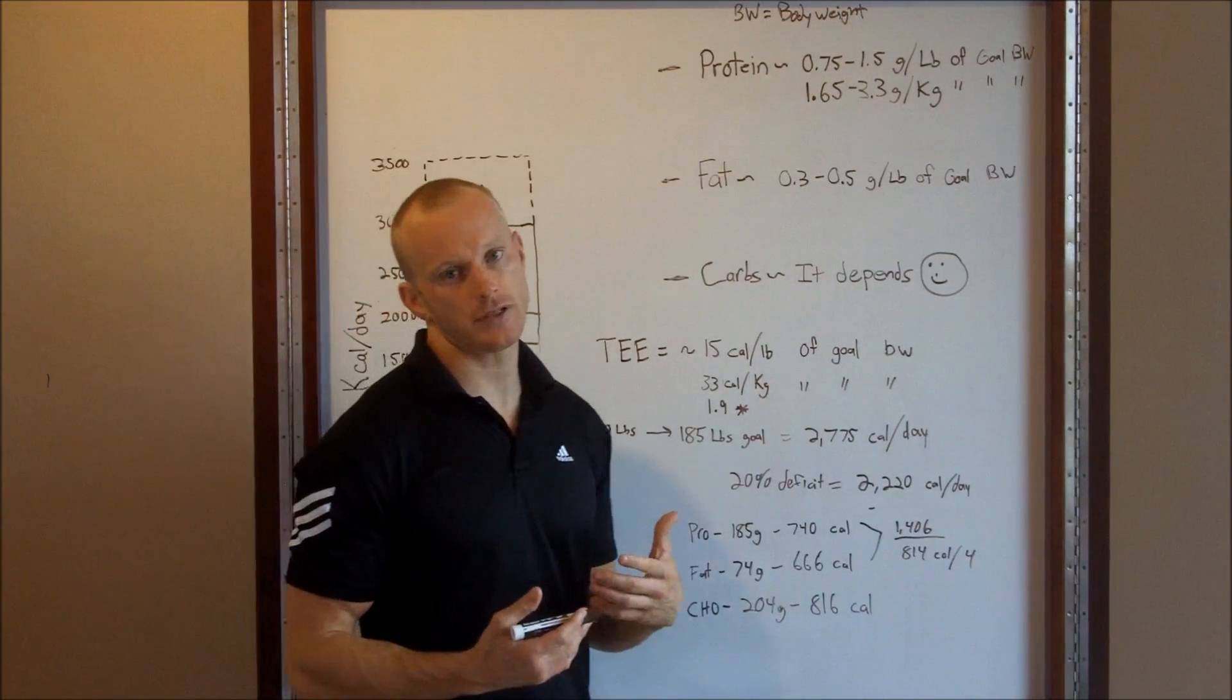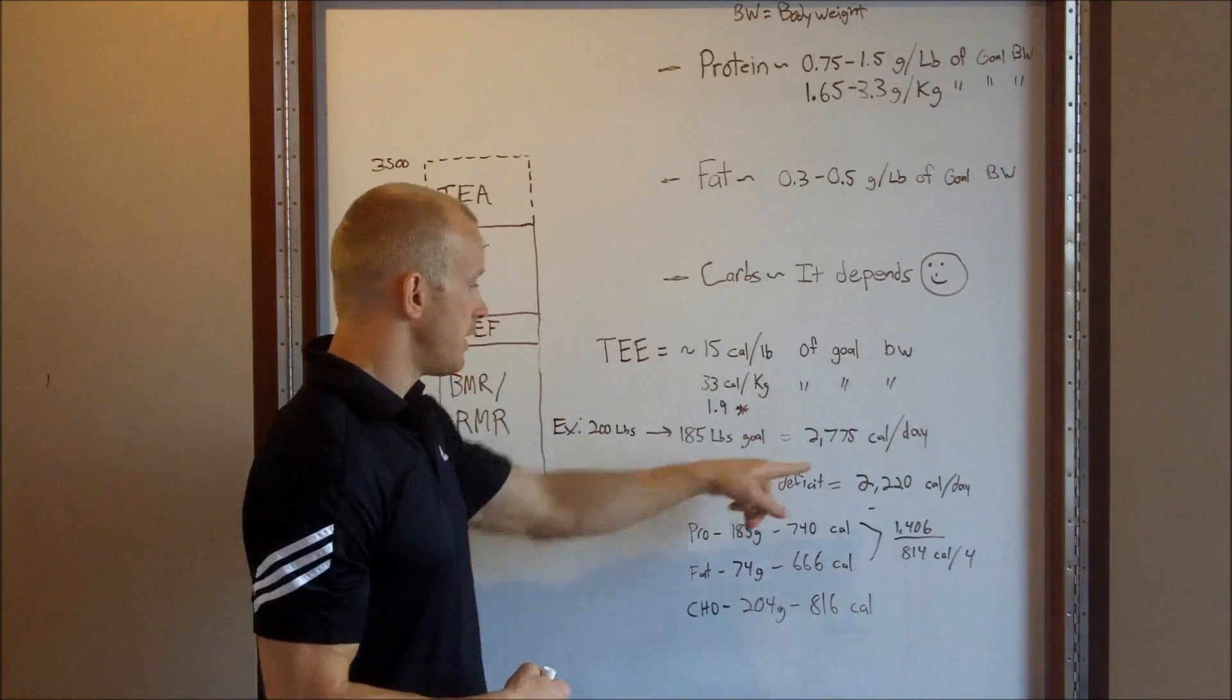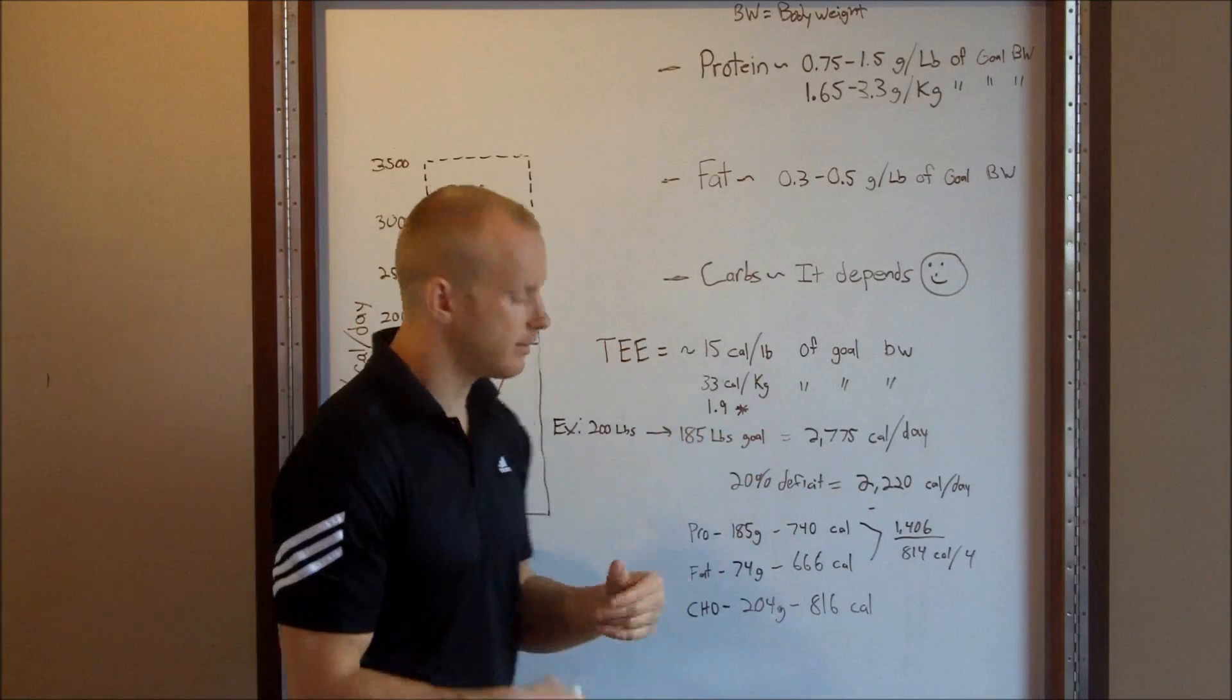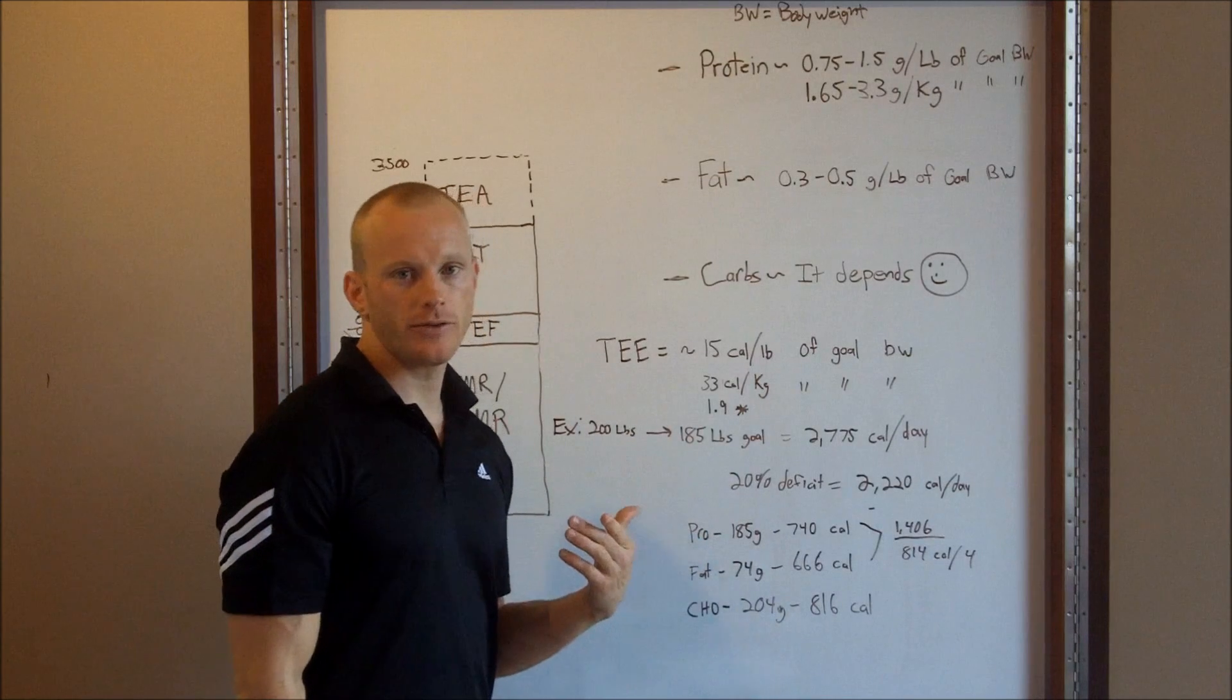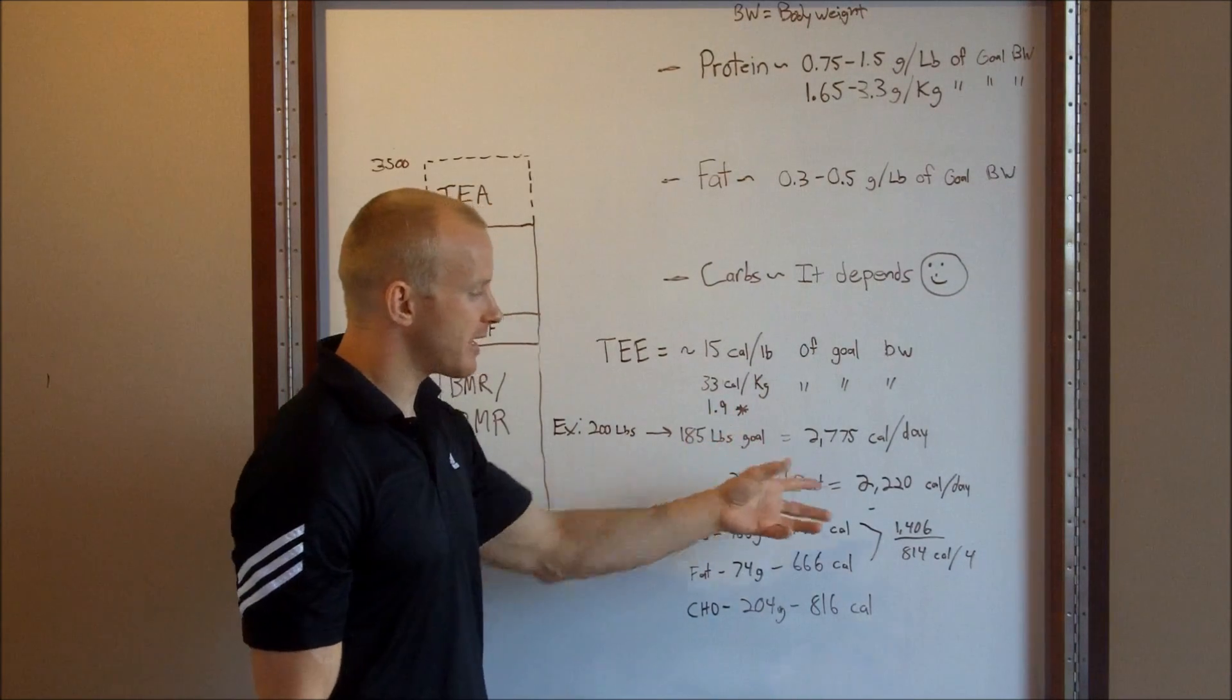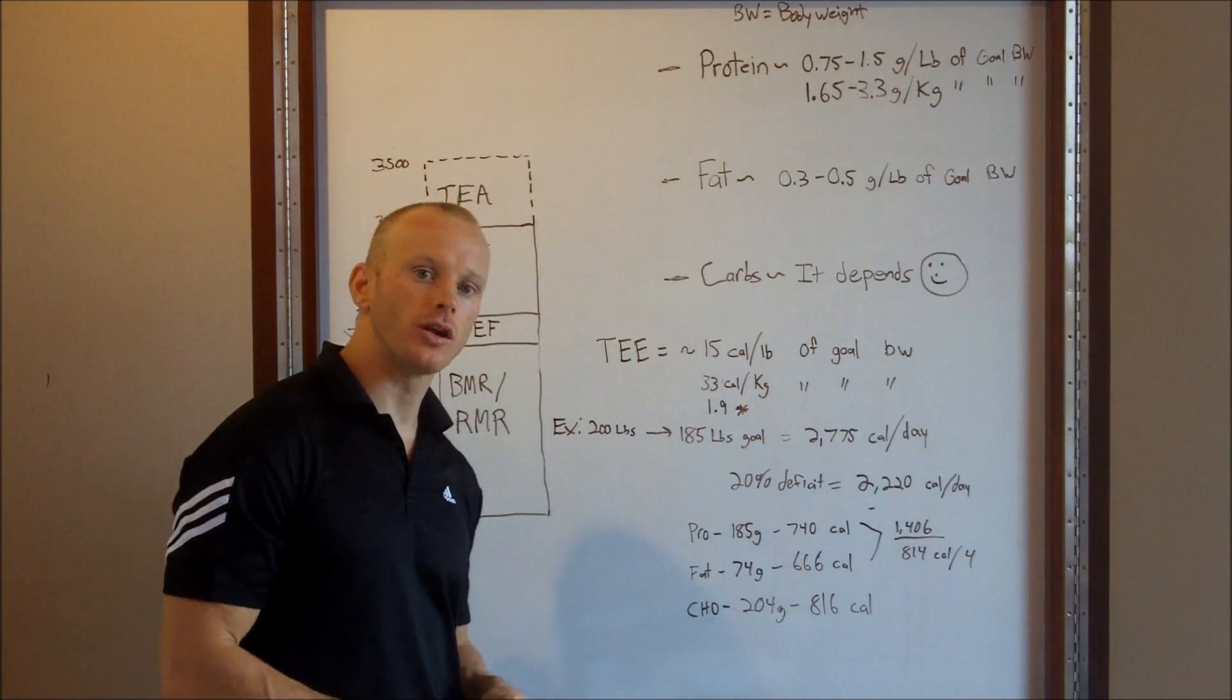I take 15 calories times my goal body weight, I get 2,775 calories per day burned. It's about right. I'm pretty active, working out about five days a week. Now, I want to set a caloric deficit. In other words, I want to take in less calories than I burned so that I can lose that weight. If I just eat this many calories and continue with my current activity, I'm going to stay the same weight.